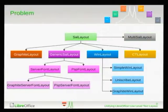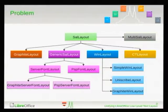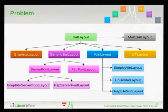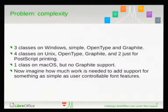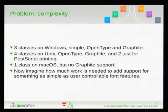So I think it's obvious how much complexity we have just to do very low-level text layout — taking some text and a font file and returning glyph indices and positions. Nothing fancy at all, and we have all these classes just to do this. We have complexity supporting three classes on Windows, four classes on Unix, just to do PostScript printing which we don't actually use by default — we use PDF printing by default. And one class on Mac, but we don't do graphite fonts on Mac.